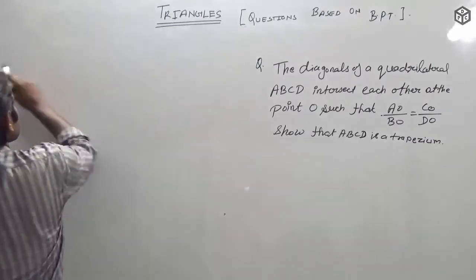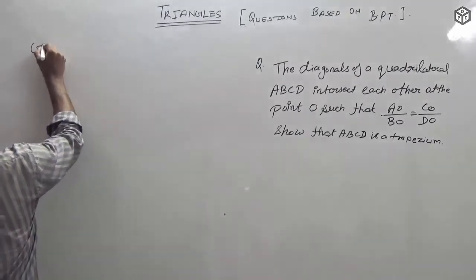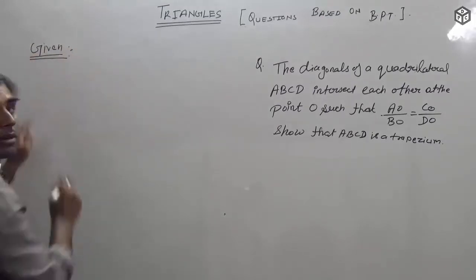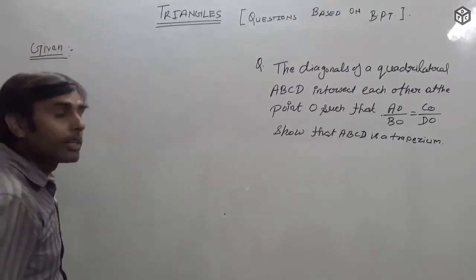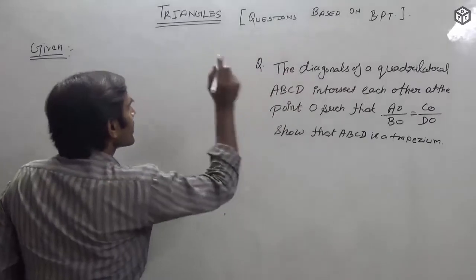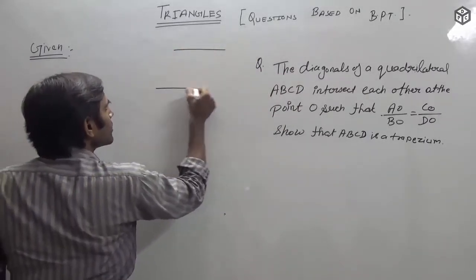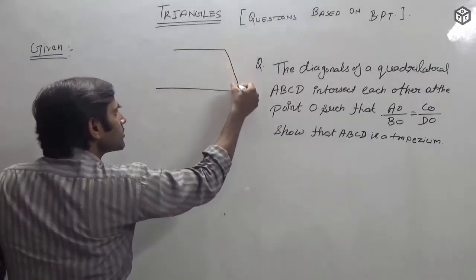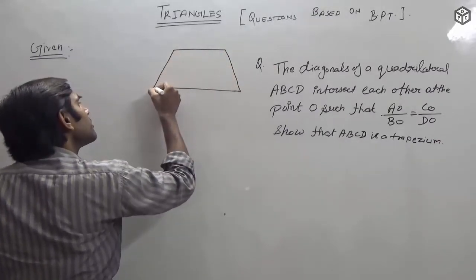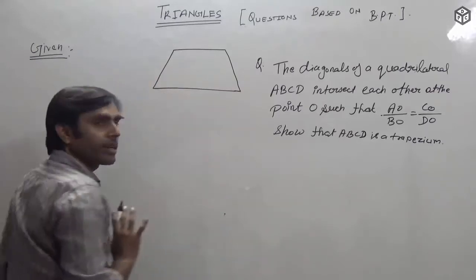Friends, let us write the given part. We have a quadrilateral. If we want to state the shape of a quadrilateral we will define the shape, but here we need to prove it is a trapezium.